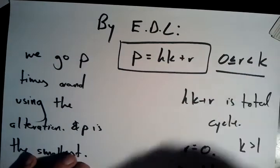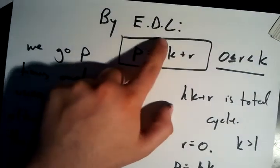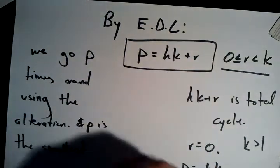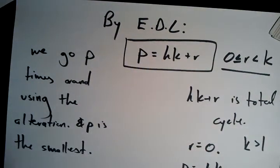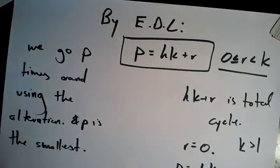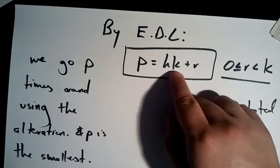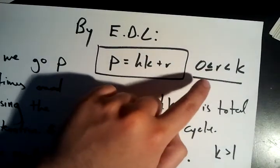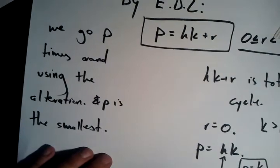So to finish off our theorem, by Euclid's division lemma, we're going to be able to write P equals HK plus R. And remember, P is, if we refer back to our first sheet, P is the number of beads per string, and K is the least number of times we can alter it. H is just some constant, R is the remainder where it satisfies that condition, by Euclid's division lemma.